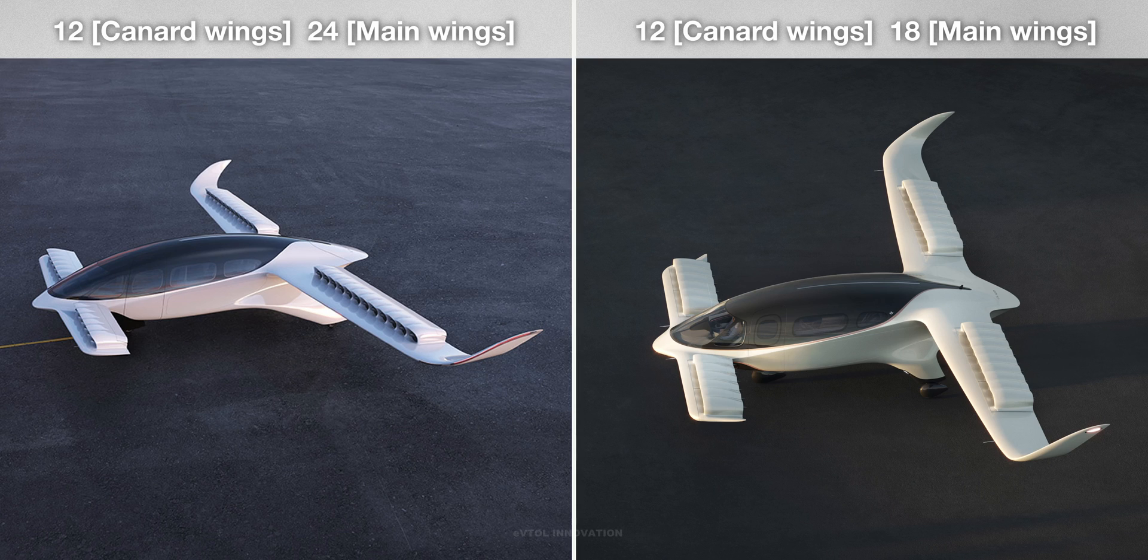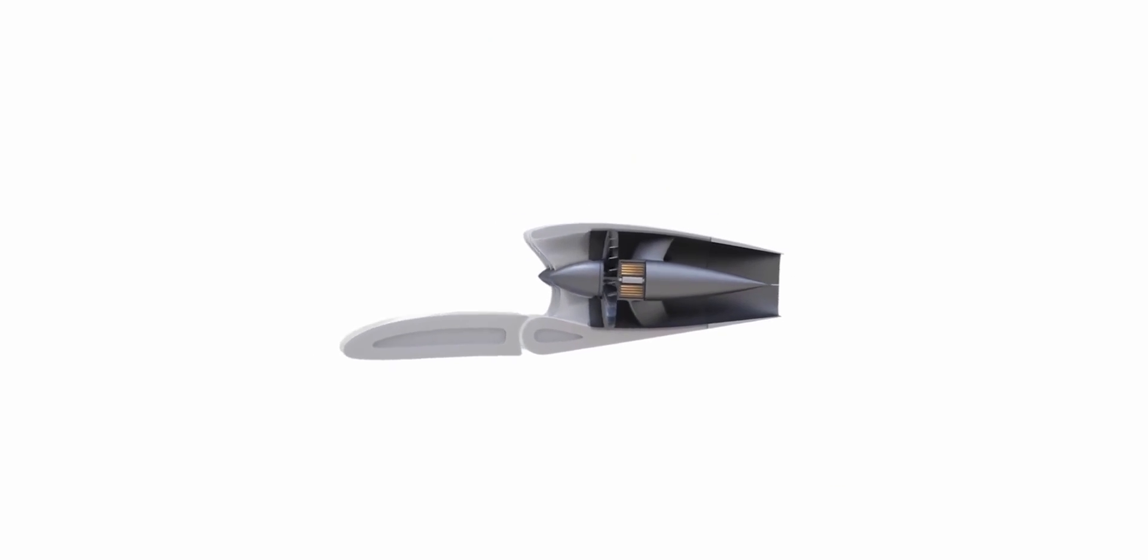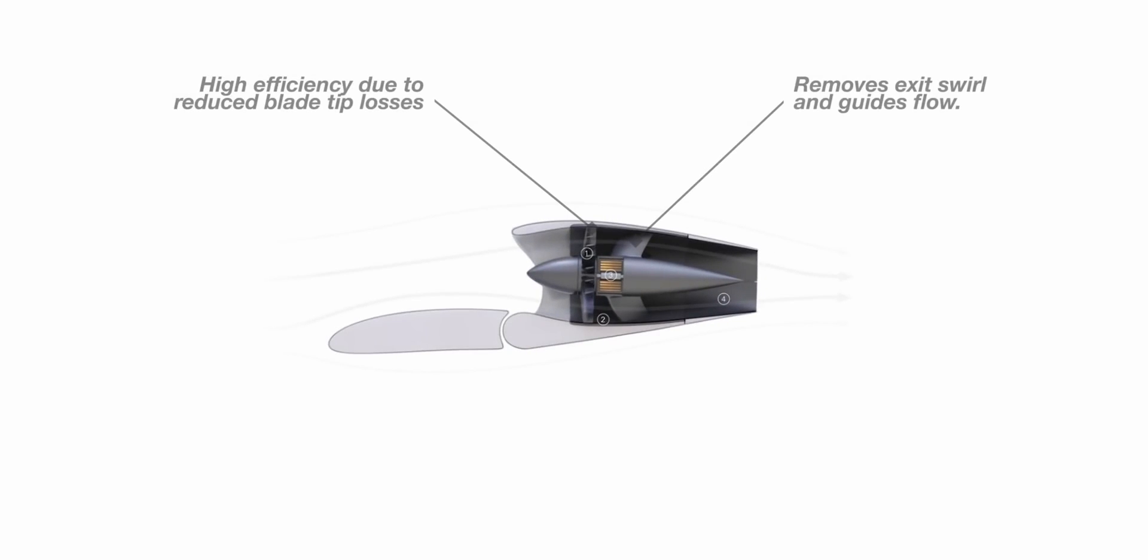The ratio canard to main wing engines went from 1 to 2 for the 36-engine version to 2 to 3 for the 30-engine version. The larger diameter of the fans also enables the use of more acoustic damping in the ducts, and gives the Lilium jet an even lower noise signature.